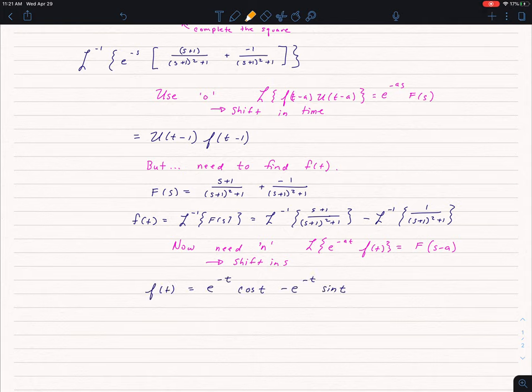So, that means my Laplace transform of this line is e to the negative t, and that takes care of the s plus 1, and the first term is my cosine, and my second term is my sine.